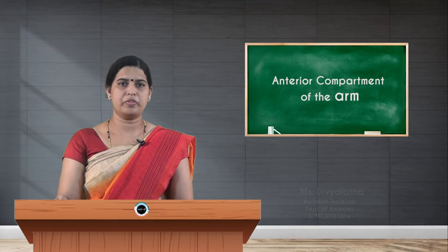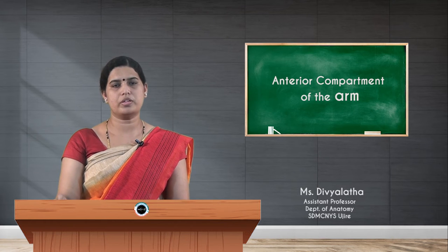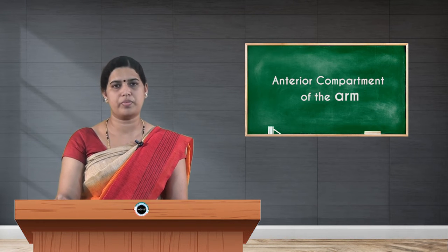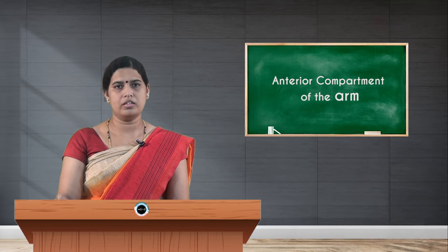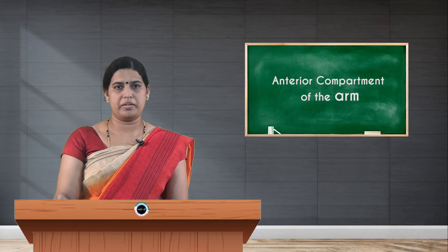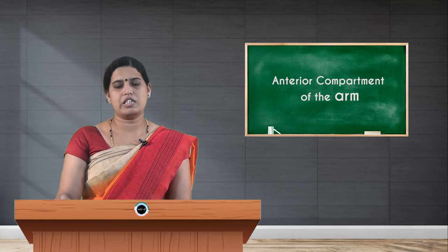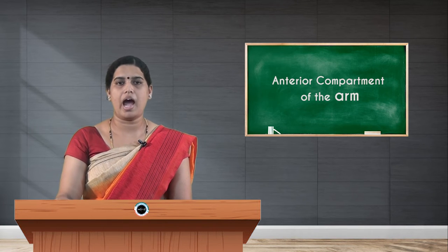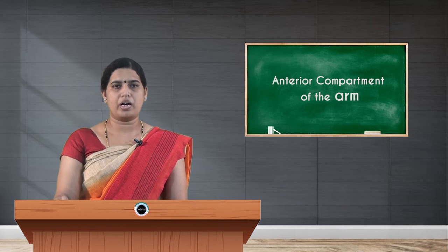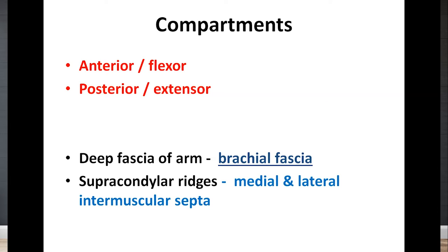Welcome to the session on the arm, which is also called the brachium, covered in Volume 1. The arm is divided into two compartments: the anterior compartment, also called the flexor compartment, and the posterior compartment, called the extensor compartment. These two compartments are separated by the intermuscular septas — the medial and lateral intermuscular septas. Today I am going to discuss the anterior or flexor compartment.